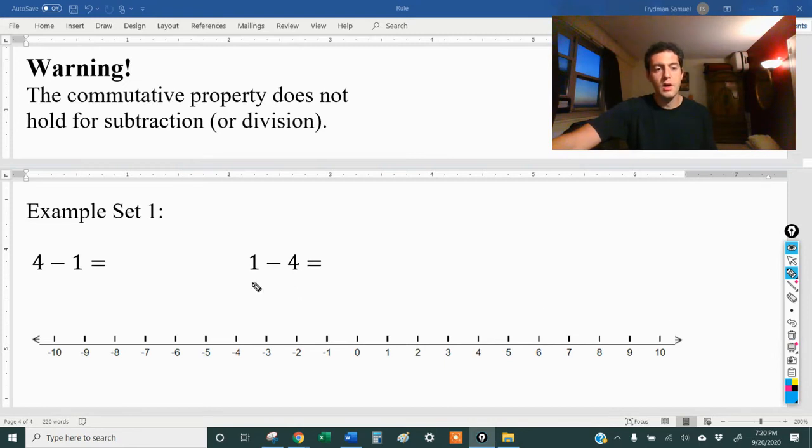What is four minus one? Well, let's look at the number line. That means we start at four and then we move to the left. Let's try that again. We move to the left, that's a little better, one space. Okay, and we get three.